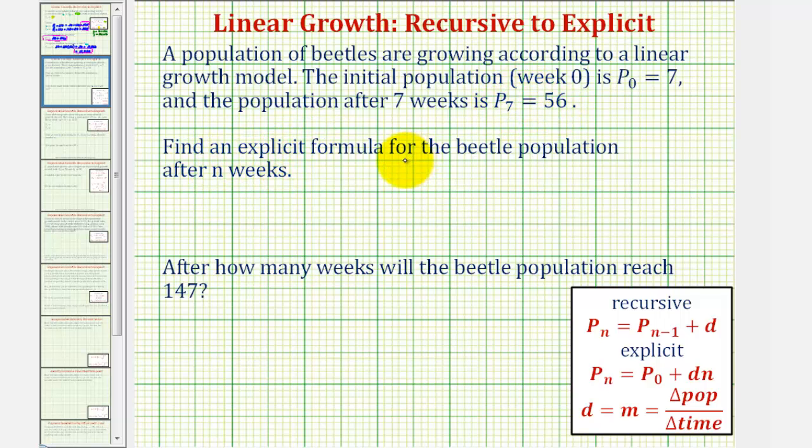We want to find the explicit formula for the beetle population after n weeks, and also after how many weeks the beetle population will reach 147.